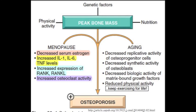Now you might be wondering if you are prone to osteoporosis. There are some risk factors for this disease. Some risk factors that affect bone mass include age, female sex, Caucasian or Asian race, early menopause, low body weight, cigarettes, low alcohol consumption, and low calcium.